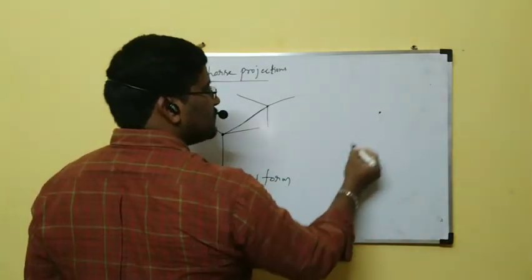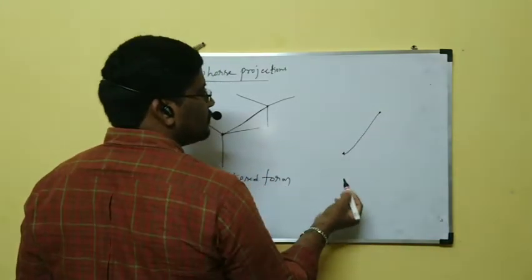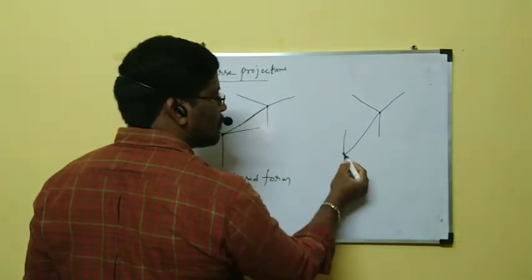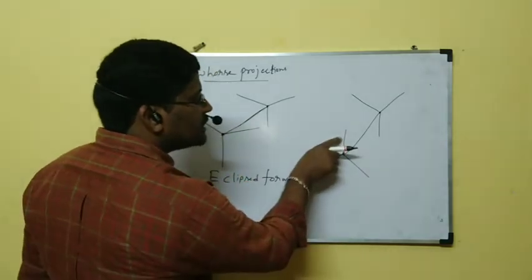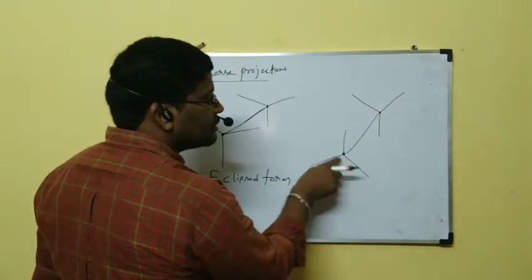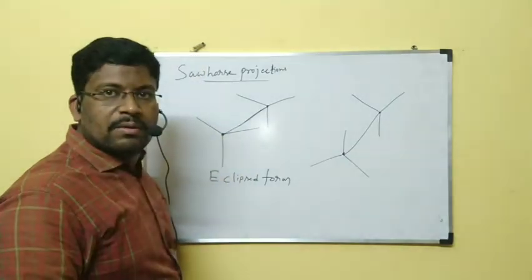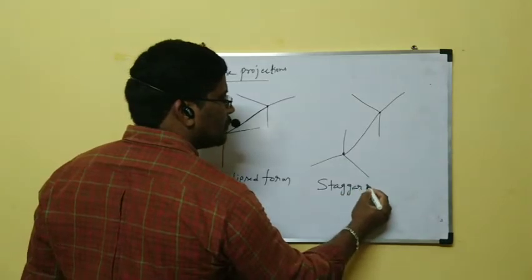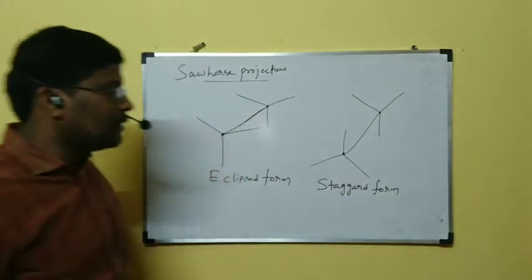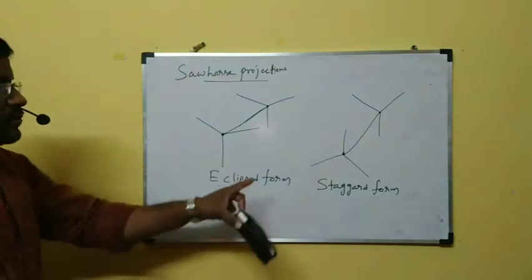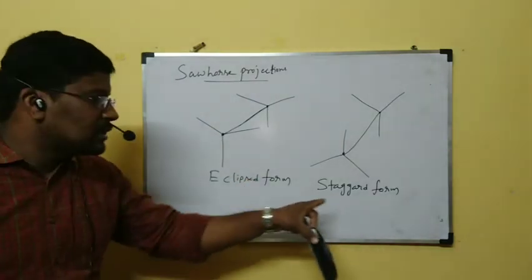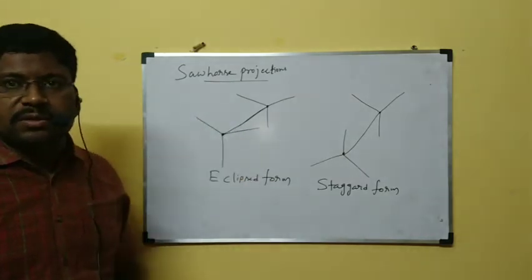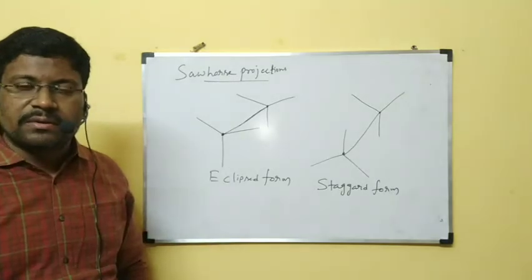Next — this is front carbon. If you see, this hydrogen is in between these two. This representation shows staggered form. These two representations — eclipsed form and staggered form — are shown with the help of Sahos projections. This is front carbon. Note all of you: these are Sahos projections.